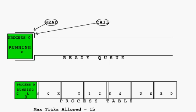Those four states are: one, running, which is in the Process Table and at the head of the ReadyQ; two, ready, which is in the Process Table and in some position of the ReadyQ; three, suspended, which is only in the Process Table.